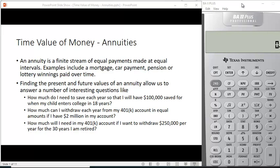I want to discuss time value of money, specifically annuities. An annuity is a finite stream of equal payments made at equal intervals. There are lots of examples of annuities, for example a mortgage payment or a car payment, a pension, or lottery winnings paid over time.